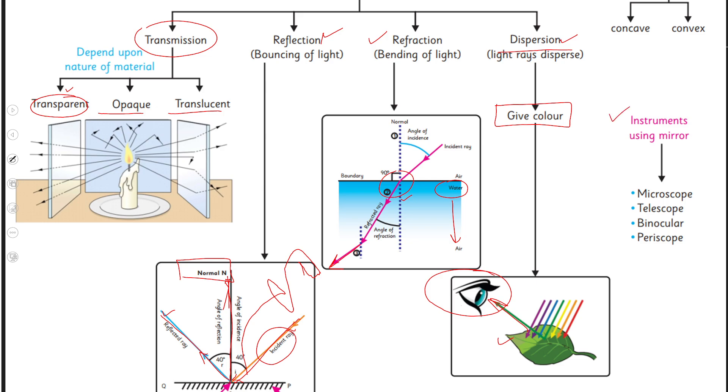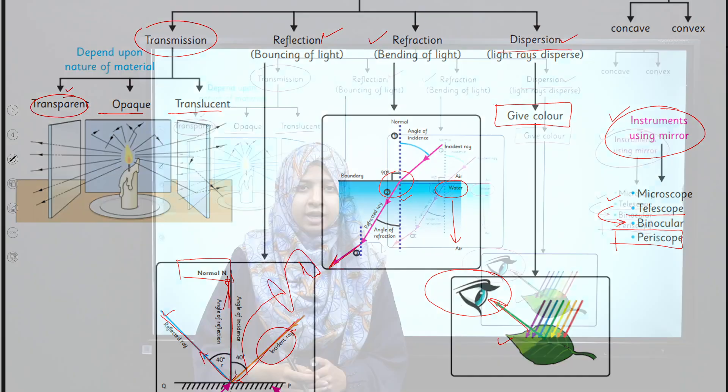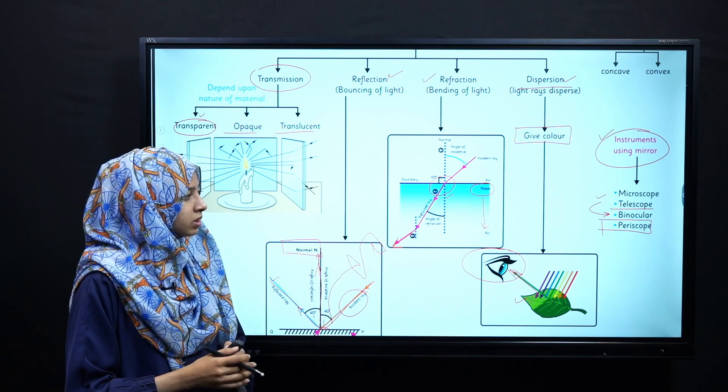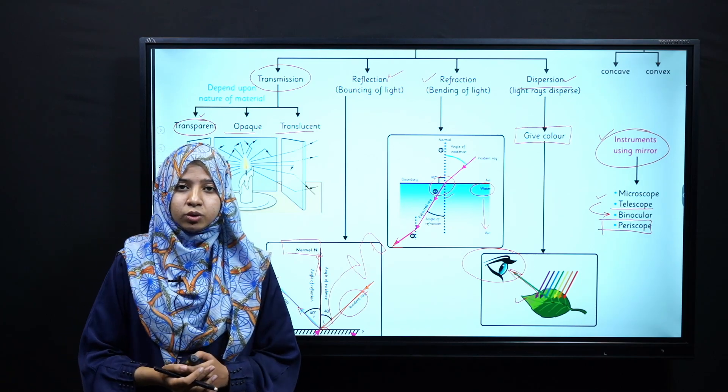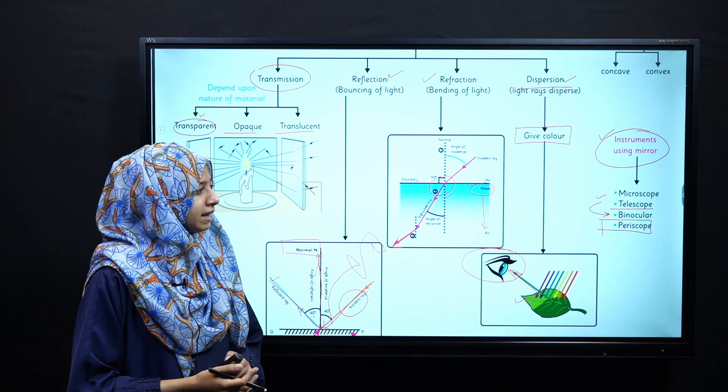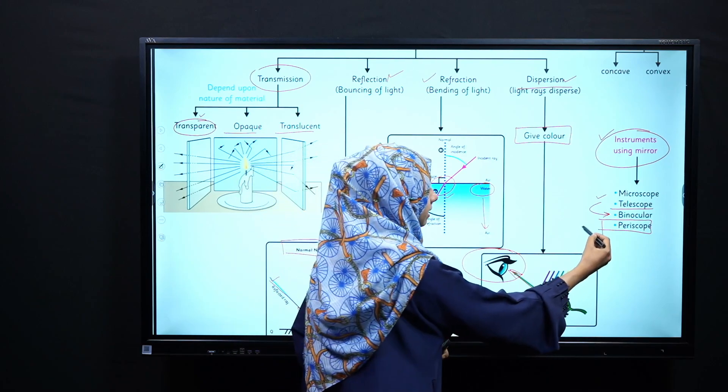Isi tarah humne discuss kiya tha aise instruments ko jo mirror ka istemal karte hain like microscope which is used to observe the fine details of any substance, whereas the telescope which is used to observe distant objects and binocular jis mein humare paas telescope ki hi high powered magnification involved hoti hai jis se hum easily dur daraz ki cheezon ko dekh sakte hain. Further humne periscope ko discuss kiya tha jo ki aisa humare paas device hai jis se hum easily observe kar sakte hain un substances, un cheezon ko, un objects ko jo ke humari direct site of view mein nahi hoti aur yeh specifically mostly hum istemal karte hain submarines mein jahan per cheezon ko dekhna kaafi mushkil hota hai.